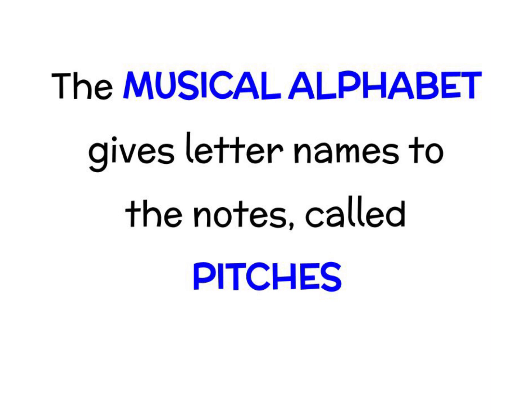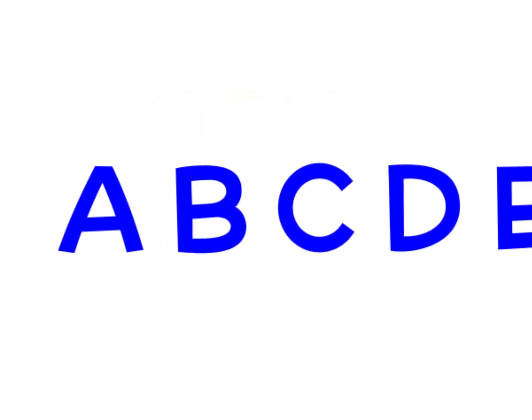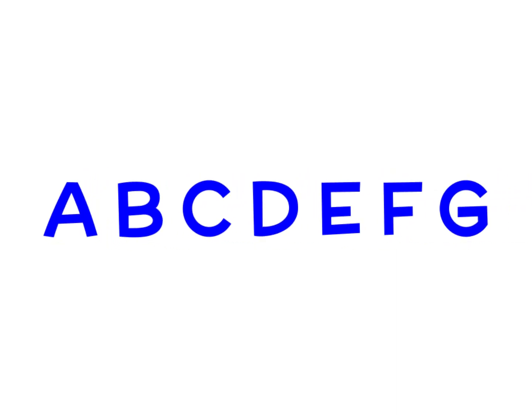The musical alphabet gives letter names to the notes called pitches. When we're talking about pitch, we're talking about how high or low a note sounds. The musical alphabet includes the first seven letters of the alphabet: A, B, C, D, E, F, and G. After G, the cycle of these letter names repeats itself and the pitches keep on sounding higher and higher.